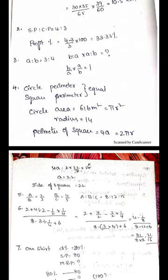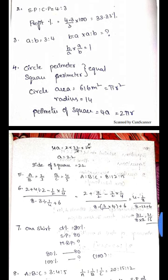Circle perimeter equals 4 times square perimeter. So 2πr equals 4a. Find the circle area. Circle area is 616 square meters. Circle area equals πr², which gives r equals 14.